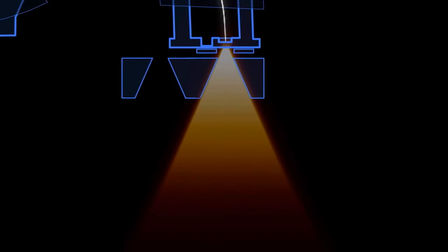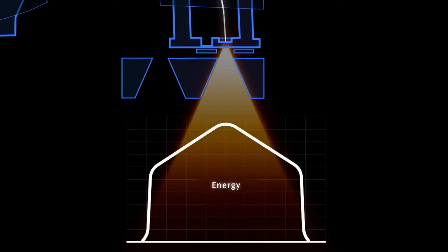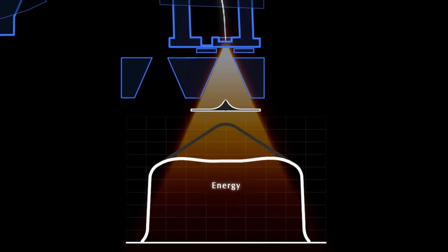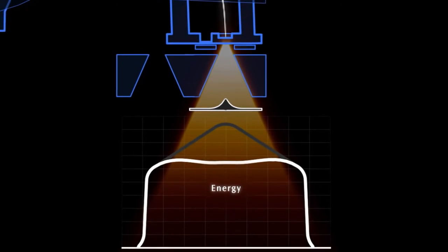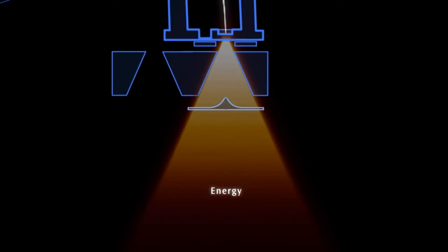At this stage, the photons are not uniformly distributed across the beam, and so a flattening filter is placed in the path of the beam. The cone-shaped filter absorbs more photons from the center of the beam than from the sides, creating a uniform photon beam.